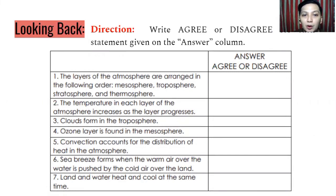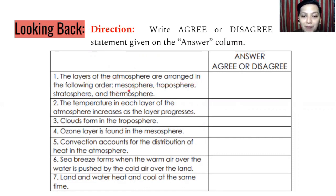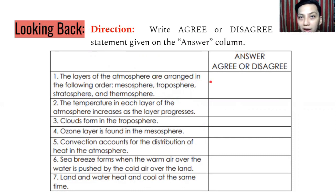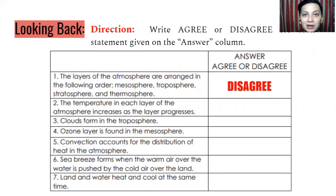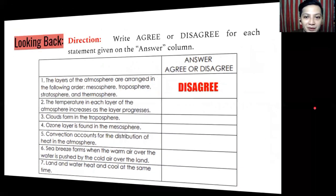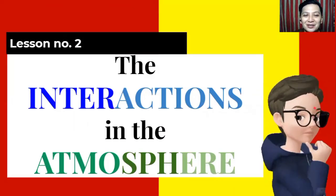As we look back, all you have to do is answer if you agree or disagree. For example, number one: the layers of the atmosphere are arranged in the following order — mesosphere, troposphere, stratosphere, and thermosphere. It actually has one missing — exosphere. So this is disagree, because that is not the proper order. The correct order is troposphere, stratosphere, mesosphere, thermosphere, and lastly, exosphere.